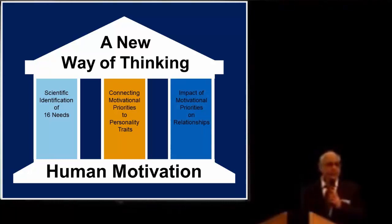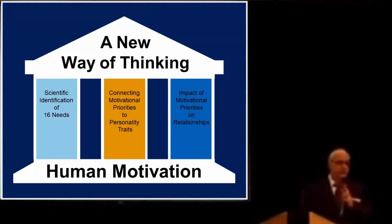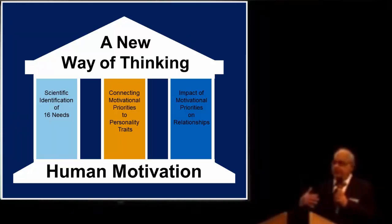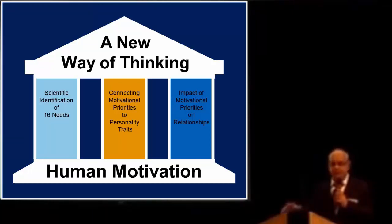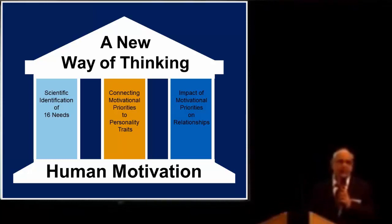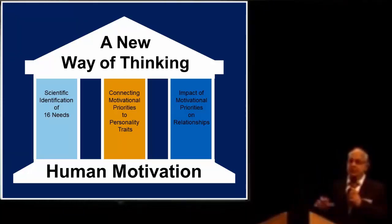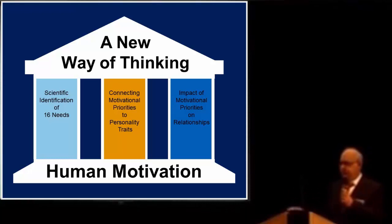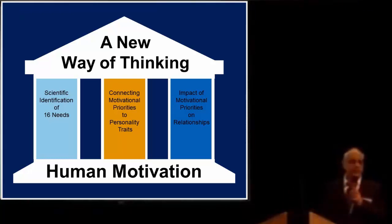The third pillar is connecting motives to relationships. In the Reese Profile, this is very unusual. Others have talked about motivation and personality, and they notice that motives and personality are connected, but not the way the Reese Profile does. The Reese Profile also connects motives to all kinds of relationships. So those are the three pillars.